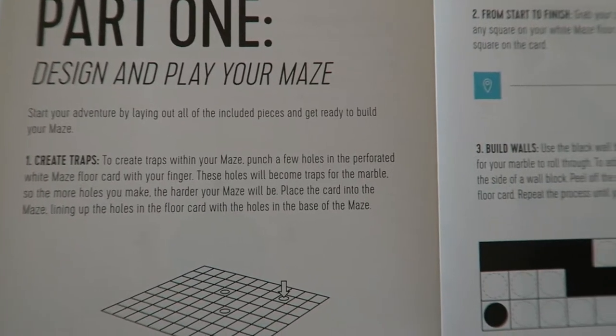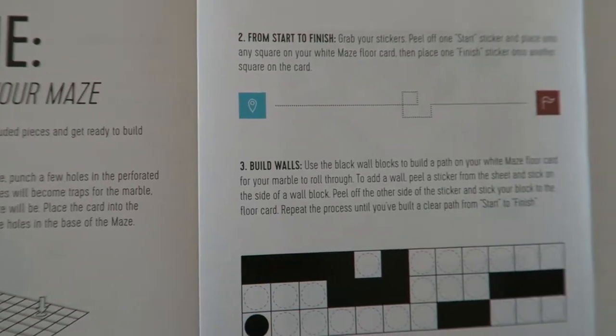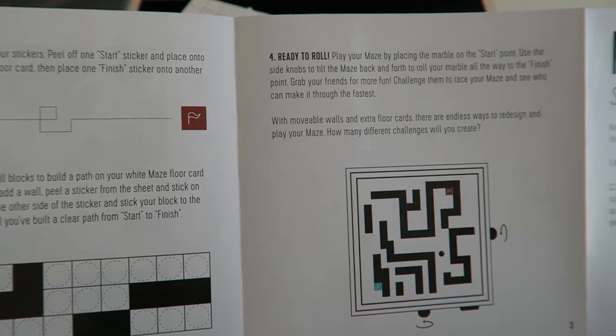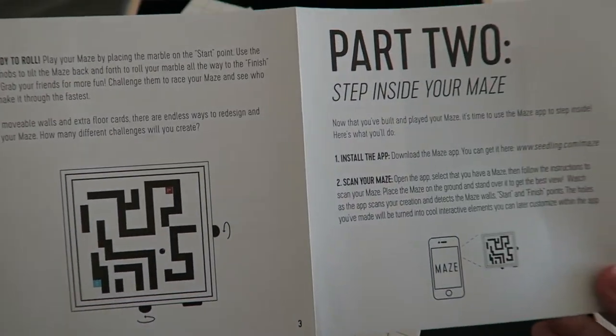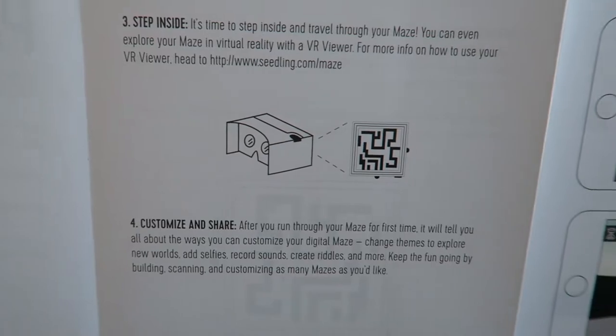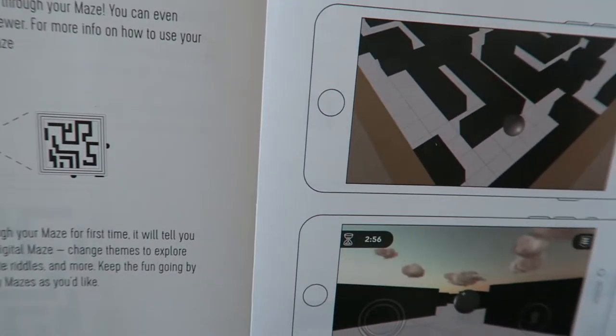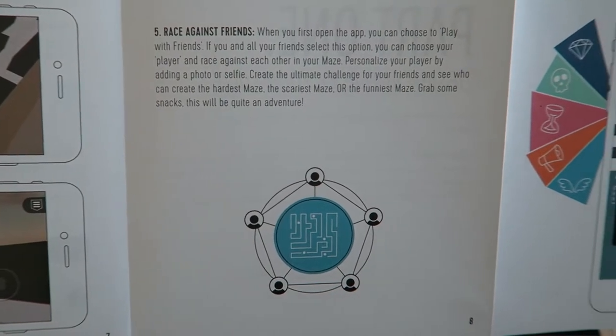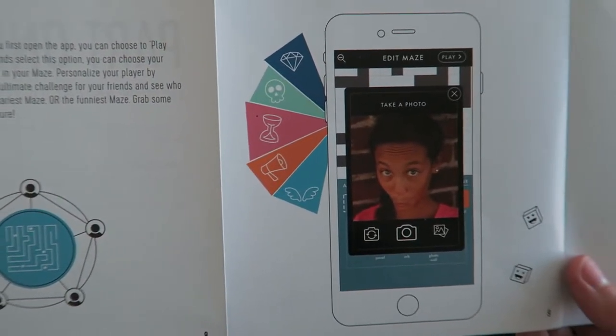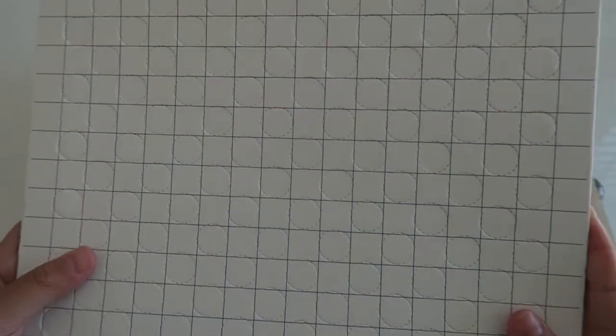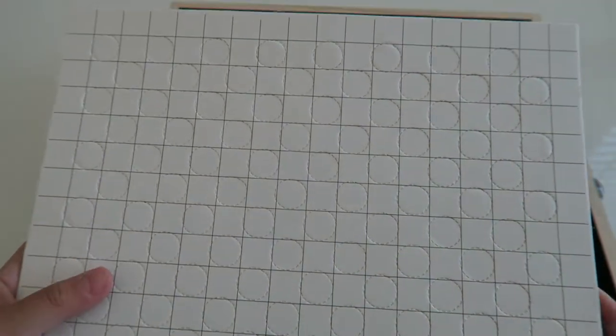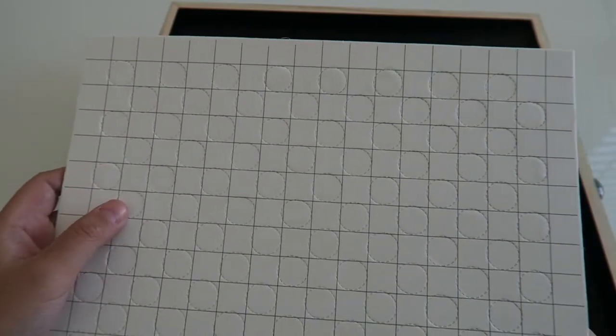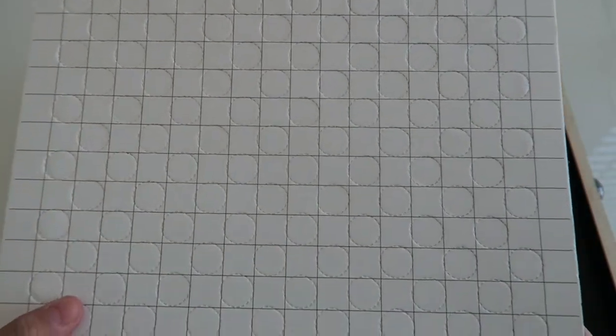Here are the instructions. Here are the maze floors. And these are going to be traps for your marble. You punch these circles out right here. And the more you punch out, the harder the maze will get.